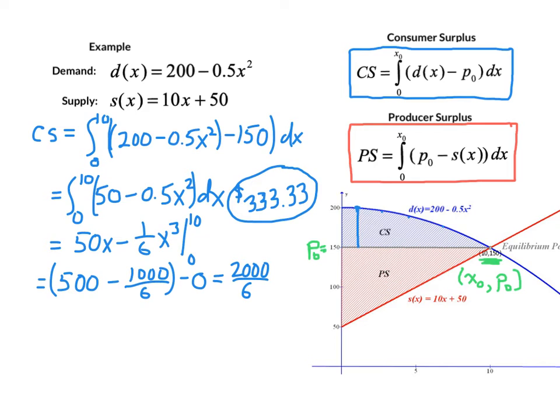We take a look at the producer surplus, that's the lower of the two, and this is the overall benefit to the producers. Our integral is going to go from 0 to 10, it's always 0 to the market equilibrium. Then we have the upper curve is the market price of $150 minus the supply function, which in this case is 10x + 50. If we clean that up, ultimately our producer surplus integral is 0 to 10 of 100 - 10x dx.